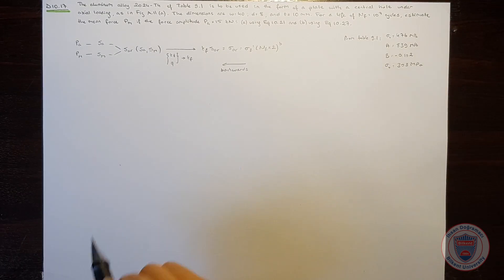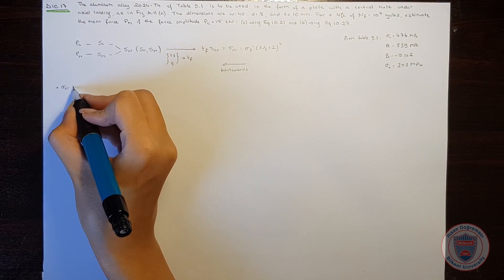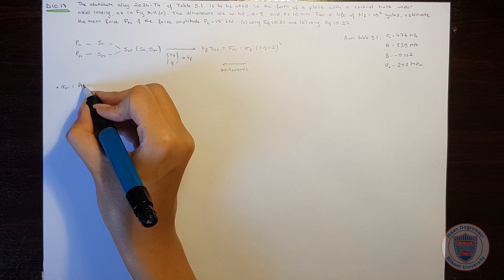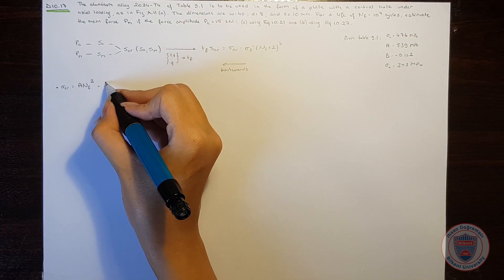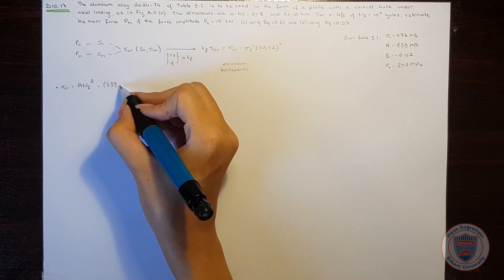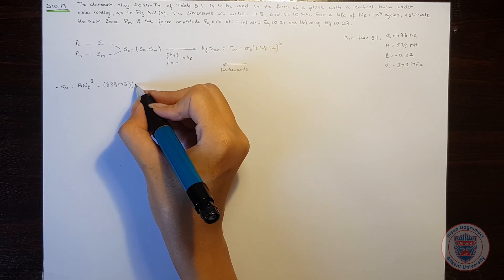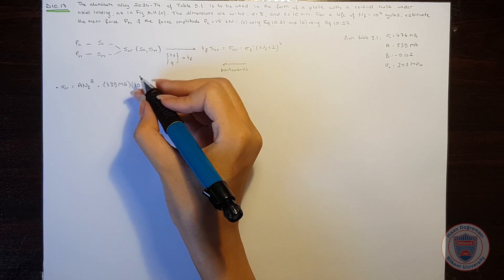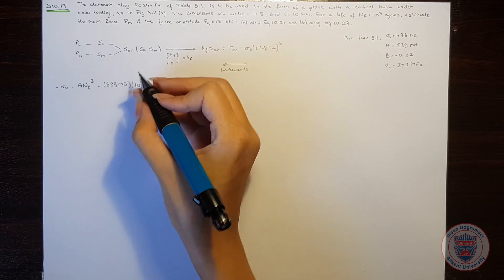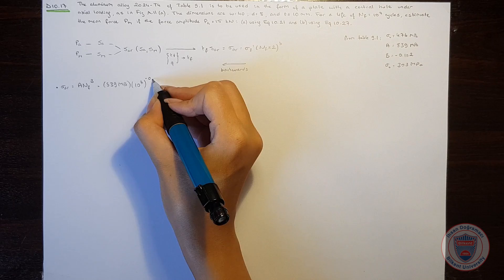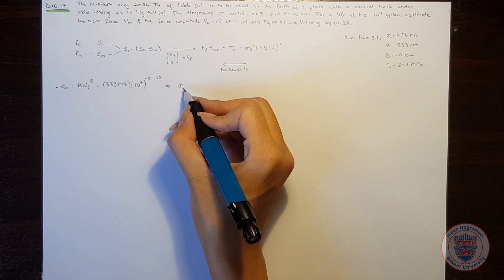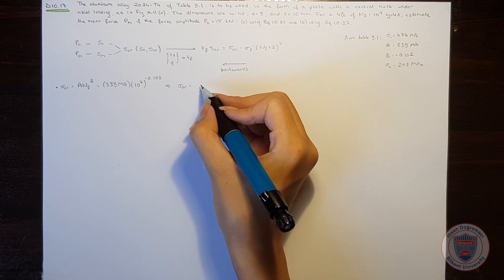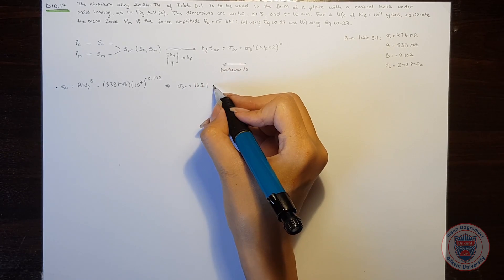So now we can start with the Basquin equation. We know that sigma AR is equal to A times NF to the power of B. And it will be equal to 839 MPa times number of cycles which is 10 to the power of 7 and to the power of minus 0.102. And the sigma AR will be equal to 162.1 MPa.